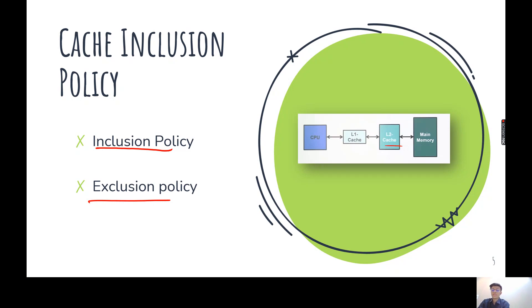Now, suppose if something is present in L2 and not in L1, but CPU frequently requires that. So see what CPU will do. CPU will transfer this to this. So here only it will copy the content of L2 to L1 and not move.